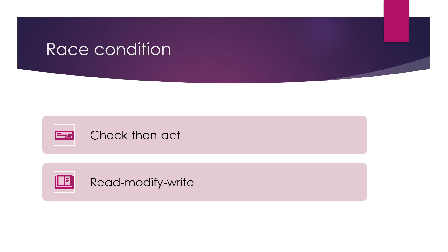How do you identify if a piece of code is prone to race condition? There are two hints — always check for these two conditions: 'check then act' and 'read modify write'. If code is making a decision by checking a condition and acting on it, that's check-then-act. If code reads a value, modifies it, then writes the update — that's read-modify-write. Wherever you find these patterns, always be careful to synchronize the access correctly.